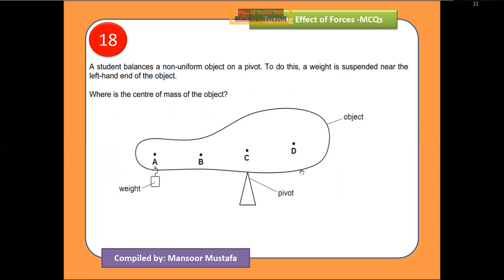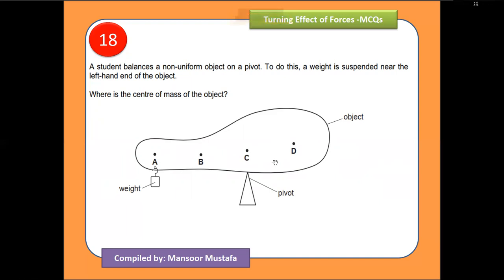The next question: an irregular object is balanced at a point. The wider area is toward the right side, suggesting the center of gravity is near position C. However, a weight is being hung from the object — this will shift the center of gravity to the right side. Therefore the center of gravity moves to position B, making option B the correct answer.